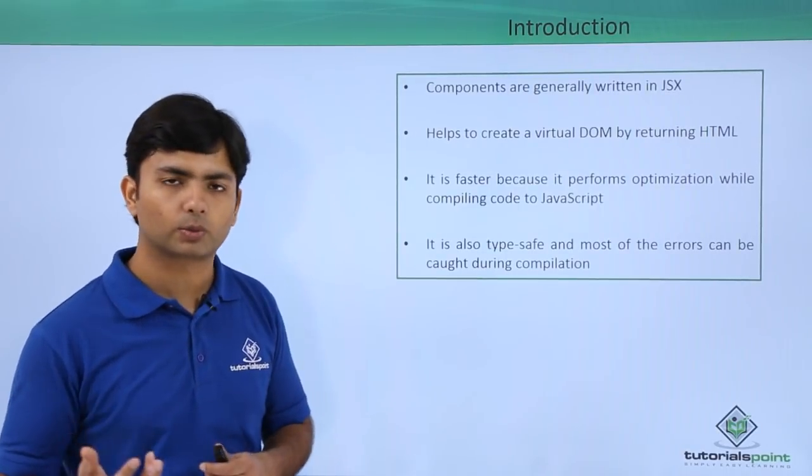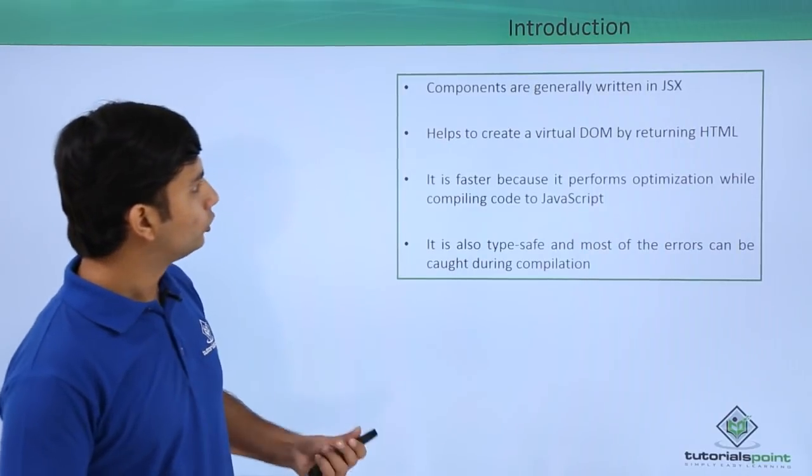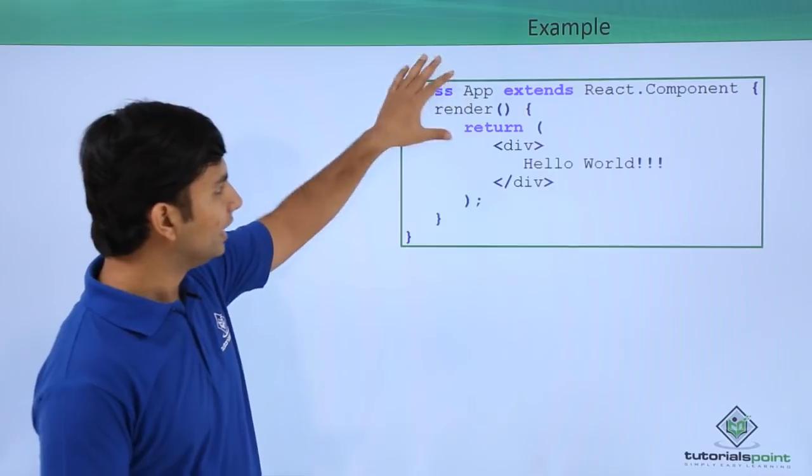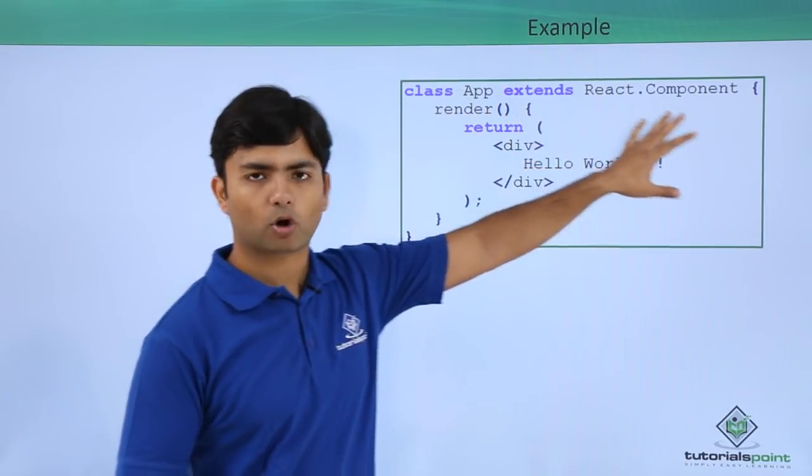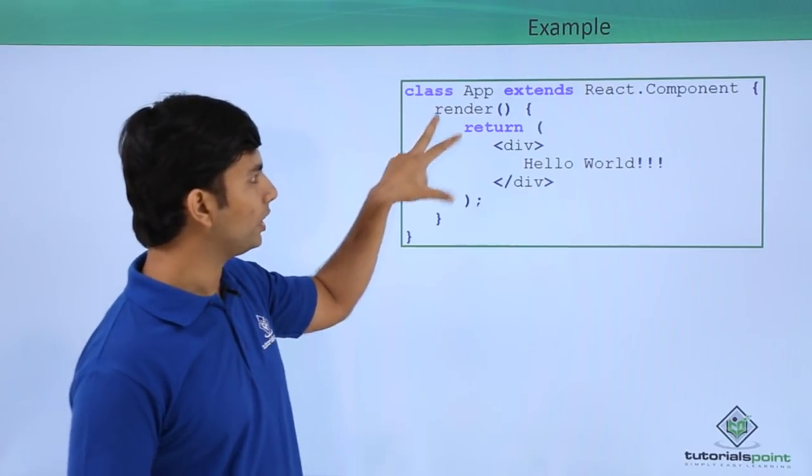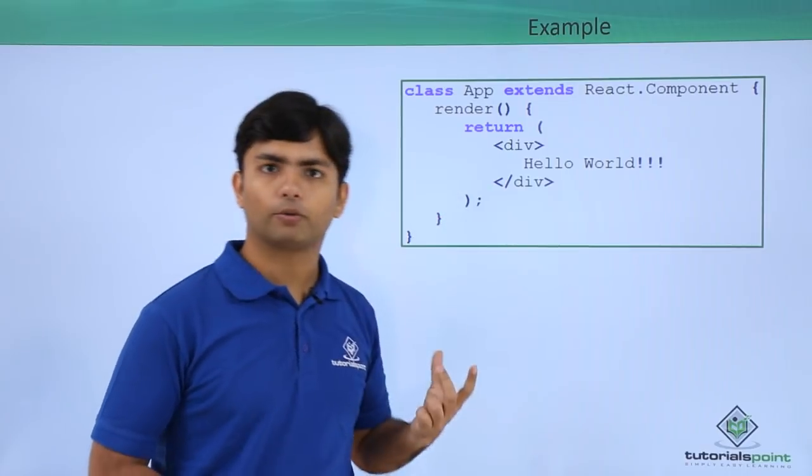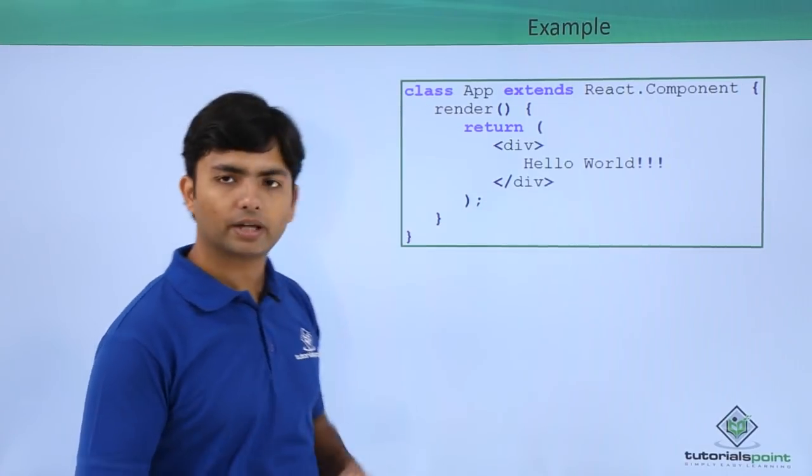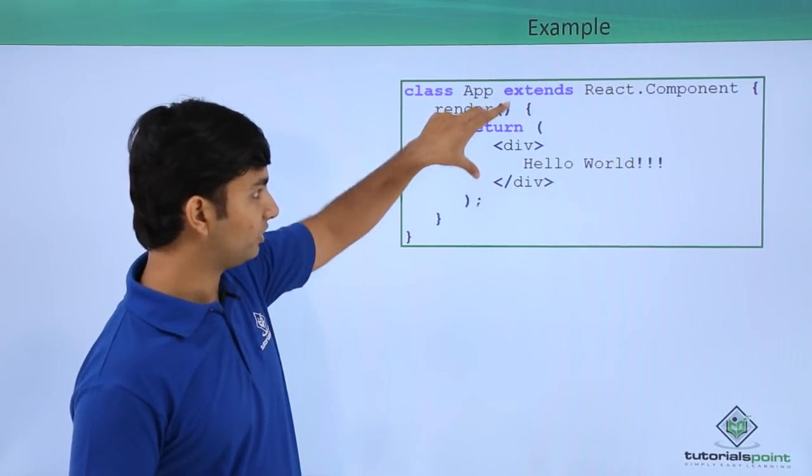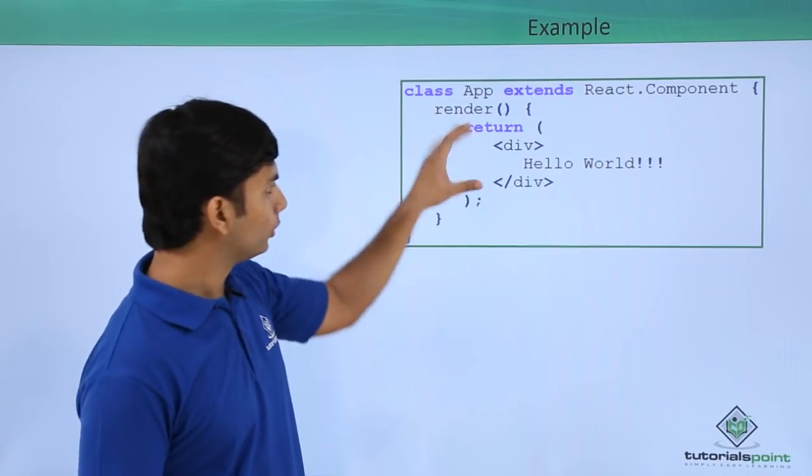In this basic example, what I am doing is it's just an app which is nothing but a component because it is inheriting from react.component. And what it is doing, there is a render method. Whenever you will be creating a component, it would be having a render method, and that render method will be responsible for returning the HTML as here you can see.